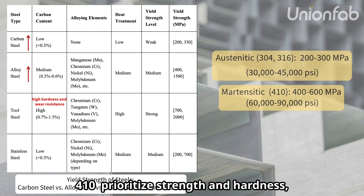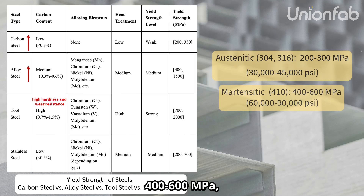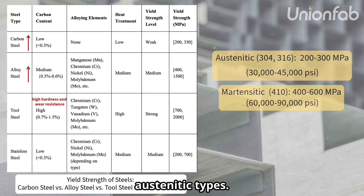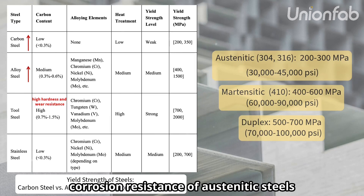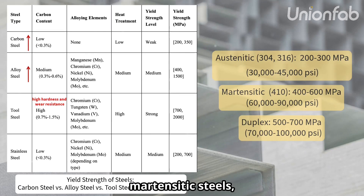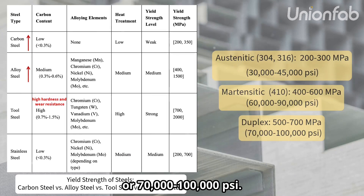Martensitic stainless steels — for example, 410 — prioritize strength and hardness, achieving yield strengths in the range of 400 to 600 megapascals (60,000–90,000 psi); however, their corrosion resistance is lower than austenitic types. Duplex stainless steels combine the corrosion resistance of austenitic steels with the higher yield strength of martensitic steels, typically reaching 500 to 700 megapascals (70,000–100,000 psi).